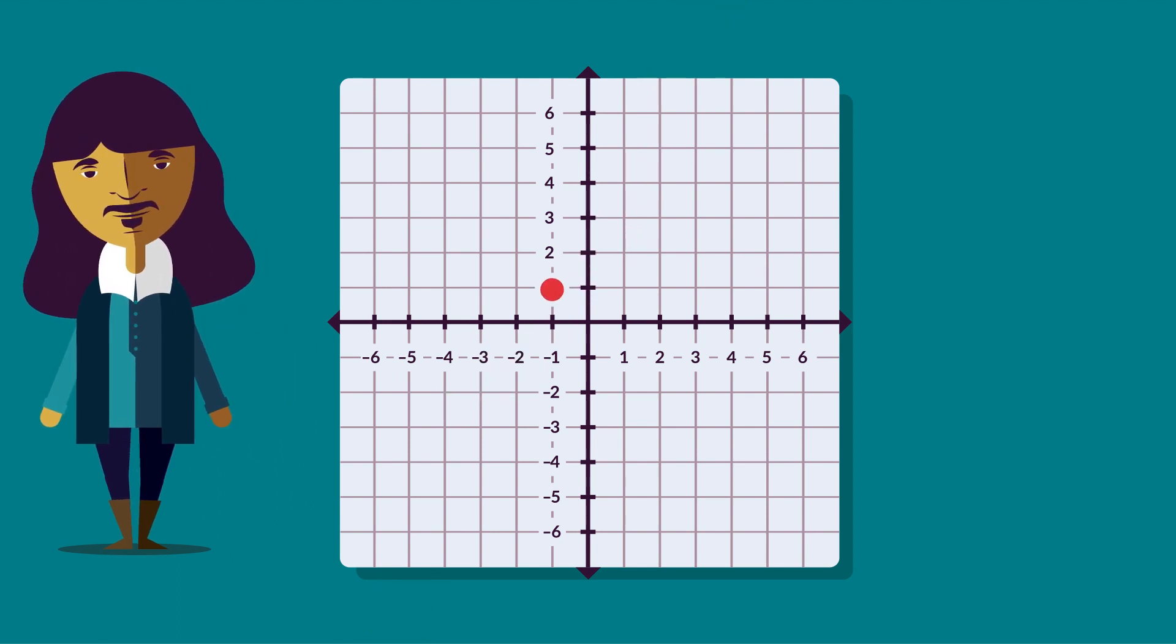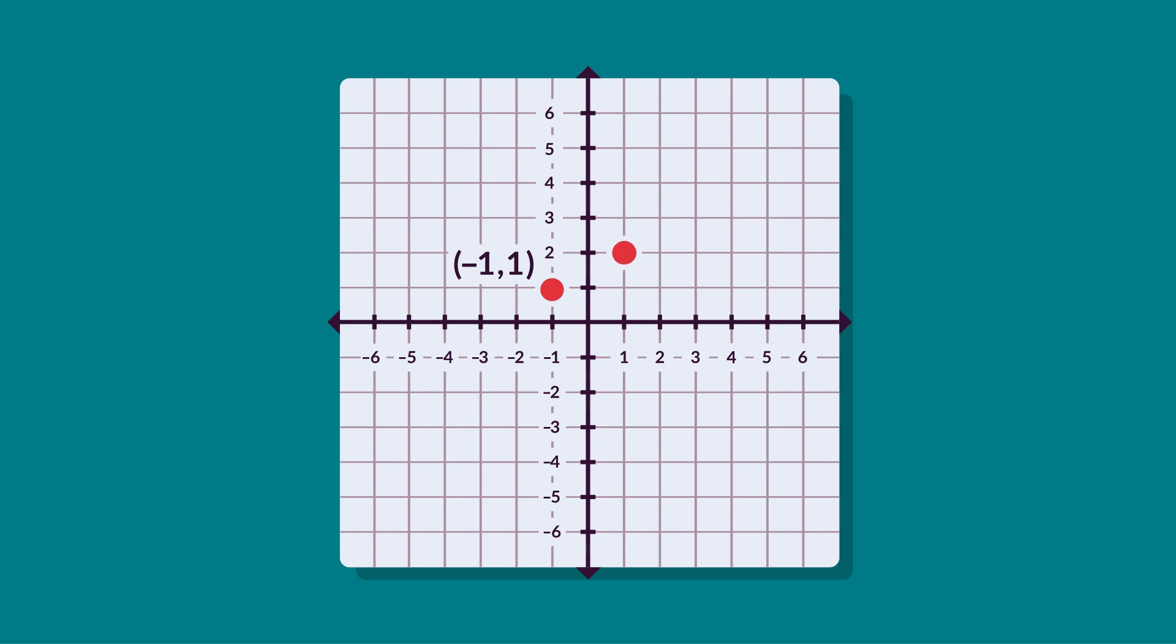If we plot the points minus 1 and 1, 1 and 2, 3 and 3, 5 and 4 on a Cartesian plane, then join up the points, we get a straight line.